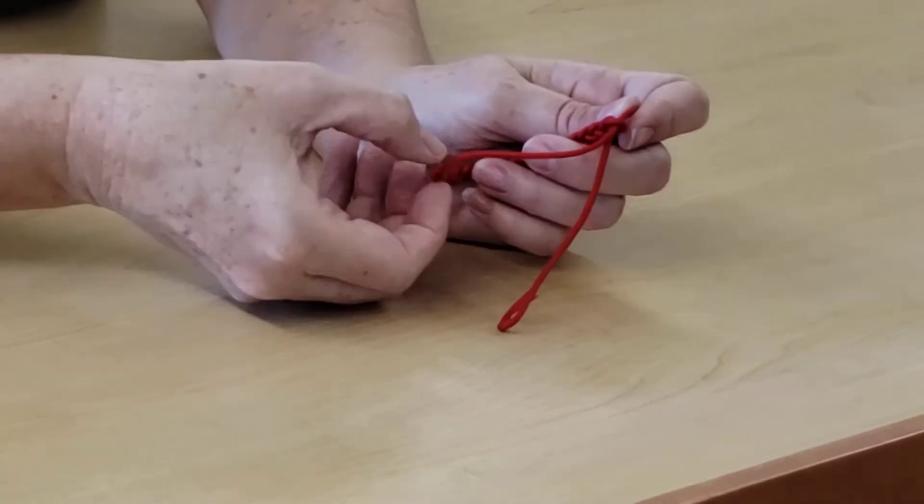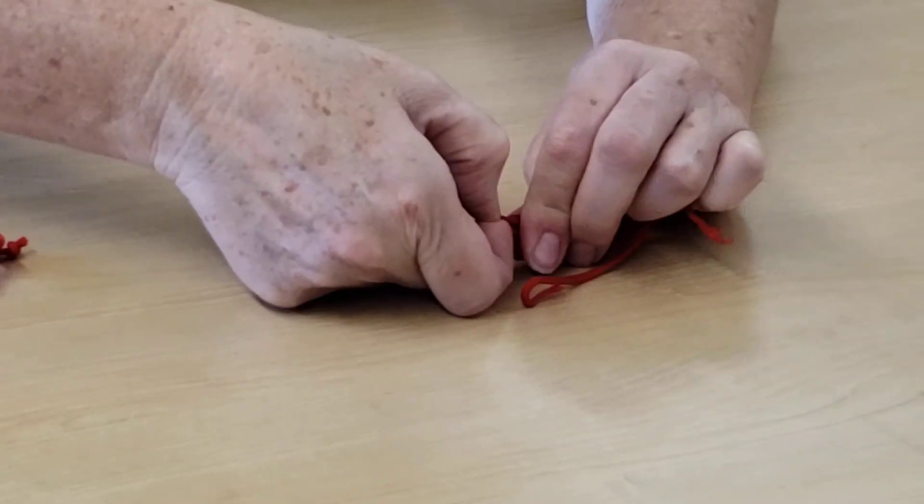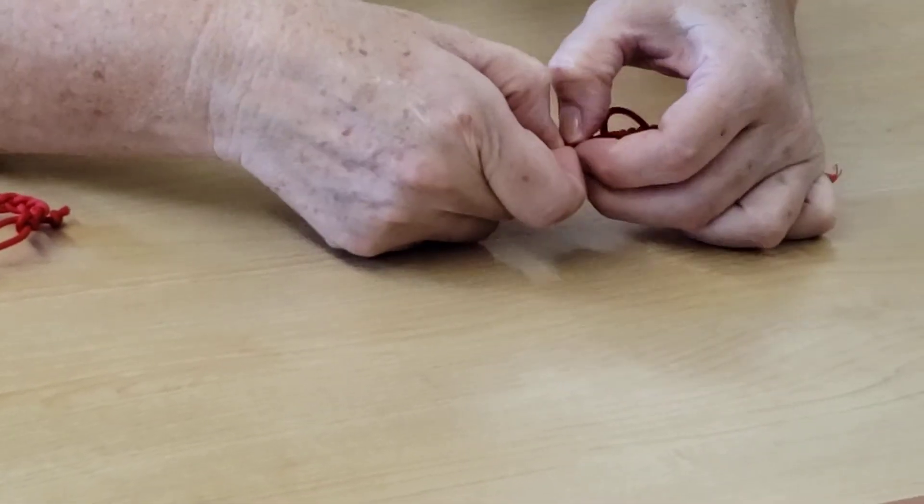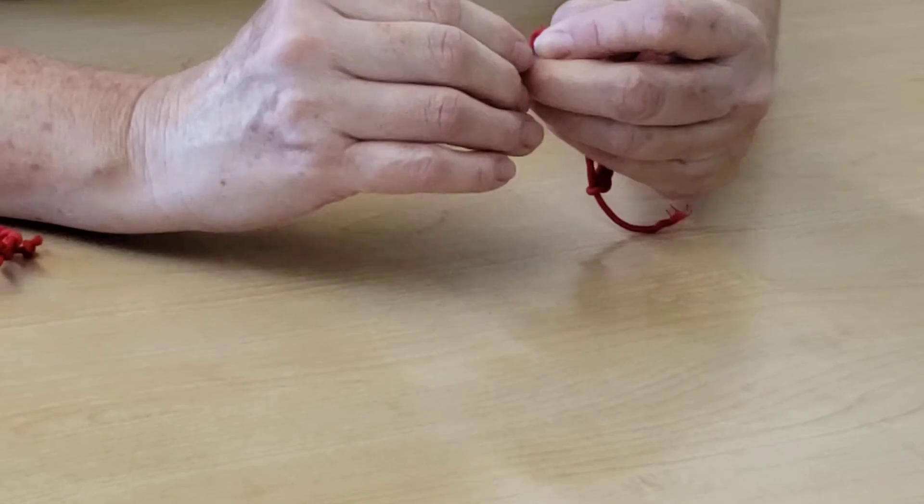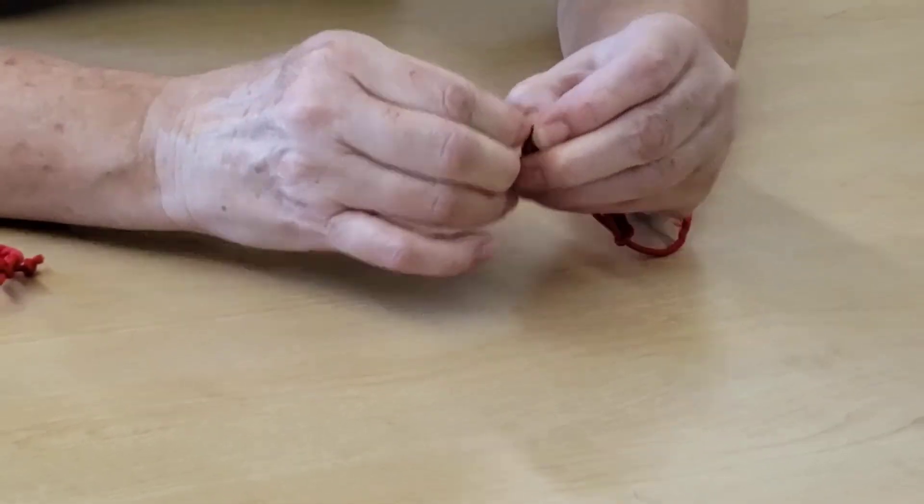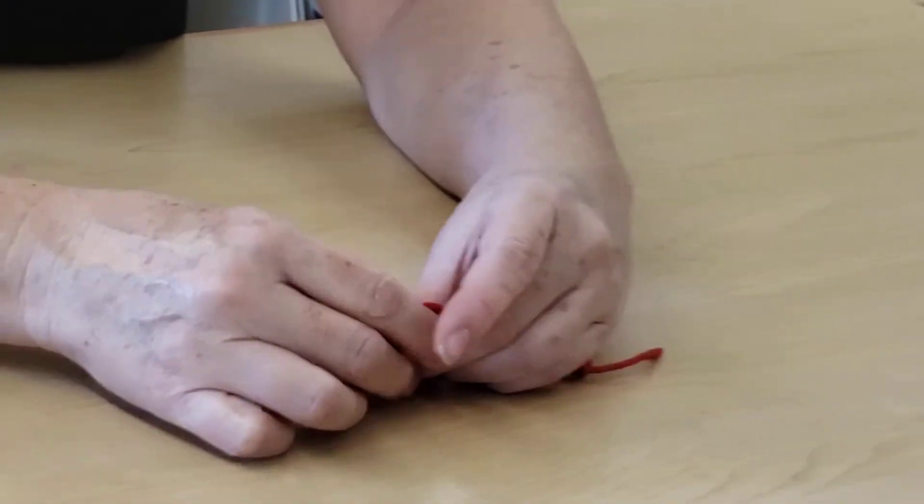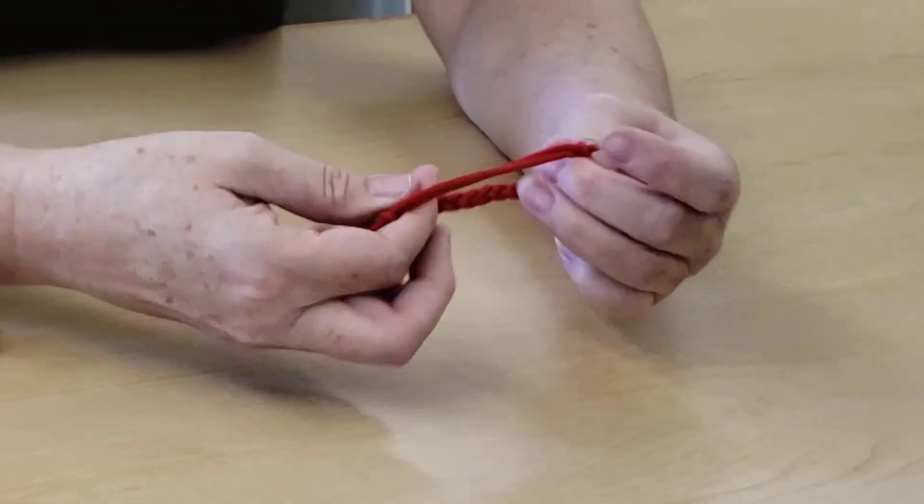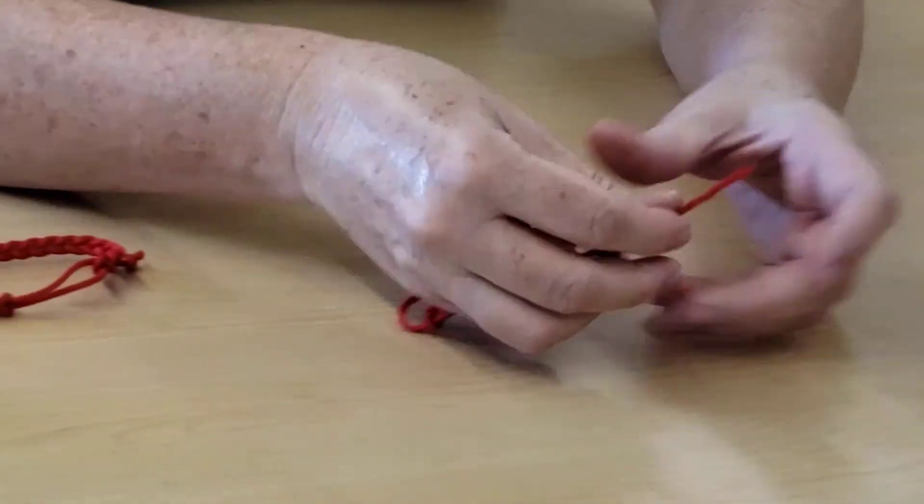Then you're gonna do the exact same thing on this side. You're gonna find the very last loop here and you're gonna put this string through it, so that the string from the opposite side, so that you're creating a closure. Actually if you have like a little skewer or even a toothpick, that might help you slide it through. But there you go, got it slid in there.